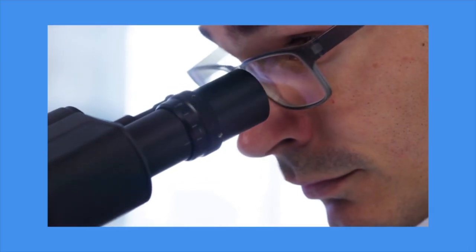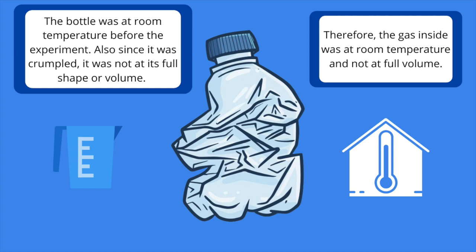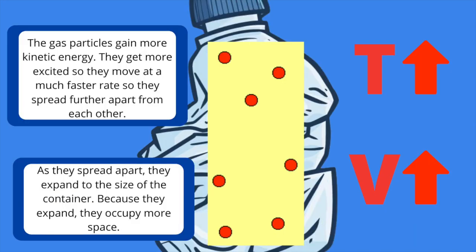Let's take a closer look at what really happened during our experiment. Before placing the bottle into the pot, the gas particles were at room temperature, and since the bottle was crushed, we know that it was not at full volume. When we placed it inside, the hot water heated up the plastic bottle. Heat was transferred from the water to the walls of the container, then to the air inside. Increasing the temperature of the gas increases the kinetic energy of the gas particles.